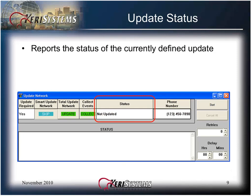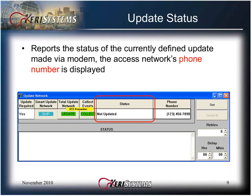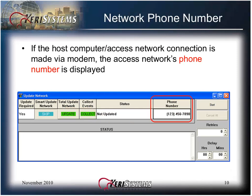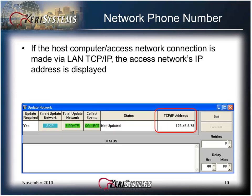The update status window reports the status of the currently defined update. If the host computer access network connection is made by a modem, the access network's phone number is displayed in the phone number field. If the host computer access network connection is made by a LAN TCP/IP, then the access network's IP address is displayed.